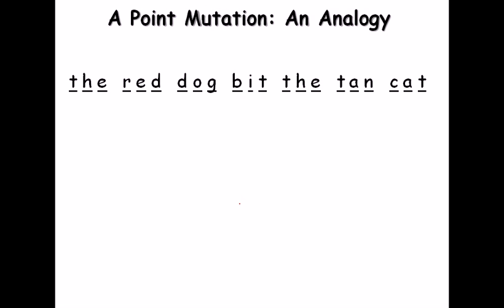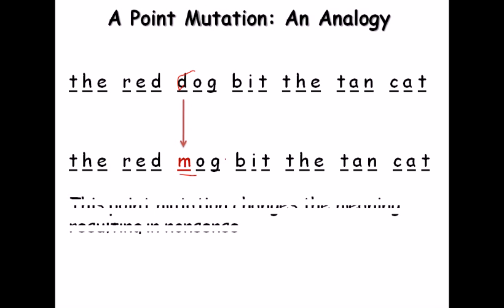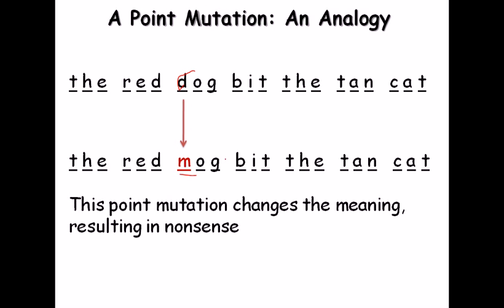An analogy: 'The red dog beat the tan cat.' If one letter is modified — say D to N — the sentence becomes 'The red nog beat the tan cat,' which is nonsense. Similarly, a single base change can make the entire genetic message nonsensical.